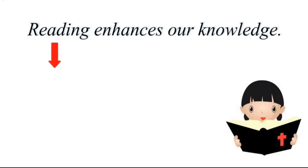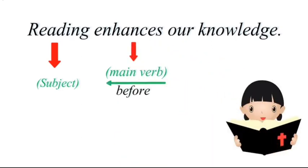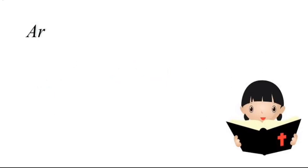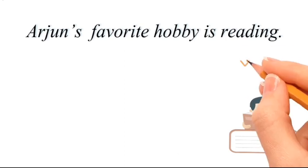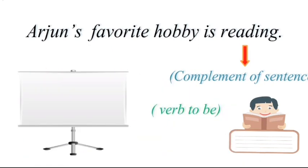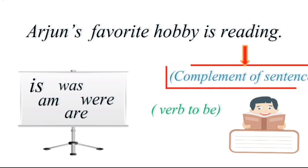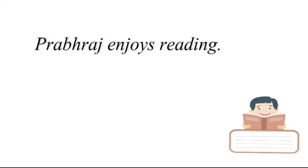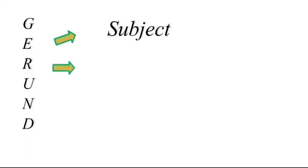'Reading enhances our knowledge' — 'reading' functions as the subject, coming at the start before the verb 'enhances.' 'Arjun's favorite hobby is reading' — here 'reading' is the complement of the sentence, also called complement of the verb 'to be,' because it comes after verbs like is, am, are, was, were. 'Prabhraj enjoys reading' — here 'reading' is the object, coming after the verb 'enjoys.' These are the three main uses of gerund: as subject, complement, and object.